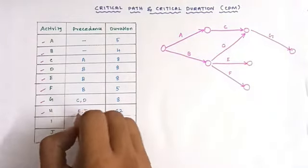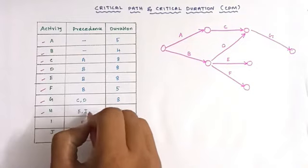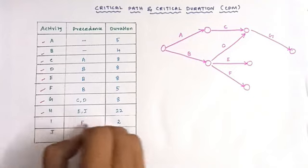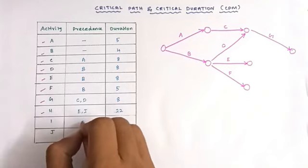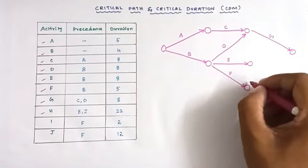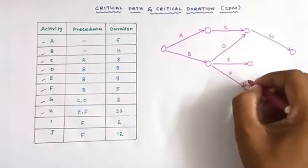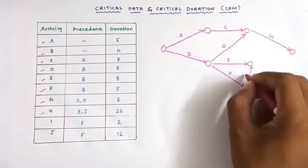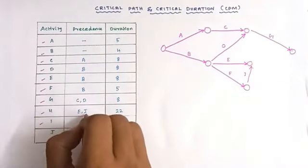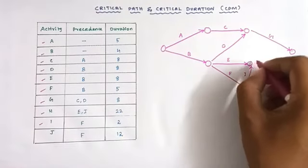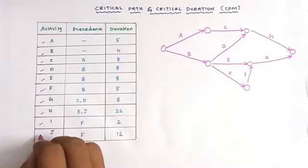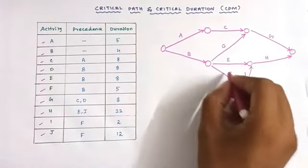Next, H activity — its preceded relationship is E and I. Since there is no I drawn yet, we first draw I activity. The preceded activity of I is F, so we draw I after F. Then, since E and I are the preceded activities of H, we draw H here. For J activity, the preceded is only F, so we draw J accordingly.